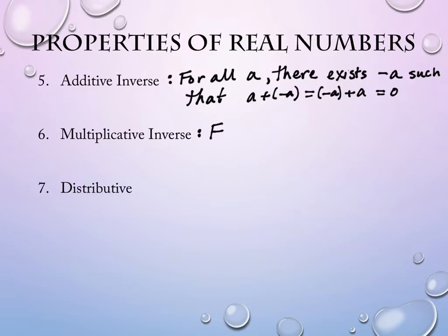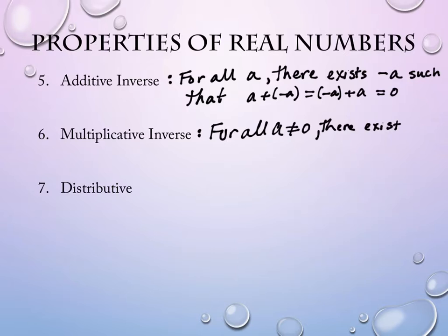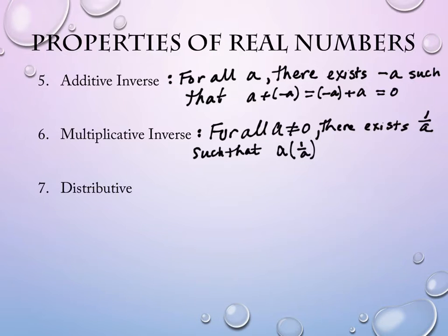The multiplicative inverse is quite similar. It says for all a, as long as it's not zero — it doesn't work for zero — for all a not equal to zero, there exists a value such that a times 1 over a, or 1 over a times a, equals 1.